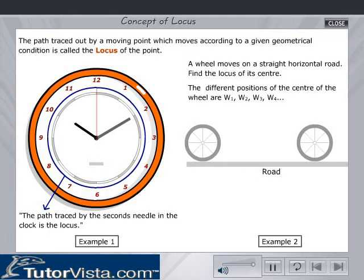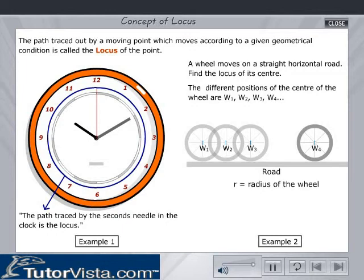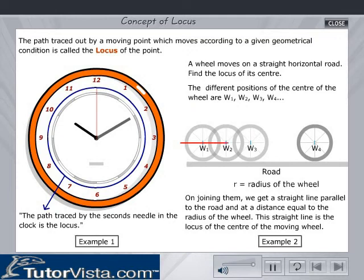The different positions of the centre of the wheel are W1, W2, W3, W4 etc. as seen here. R is the radius of the wheel. On joining W1, W2, W3, W4 etc., we get a straight line parallel to the road and at a distance equal to the radius of the wheel. This straight line is the locus of the centre of the moving wheel.